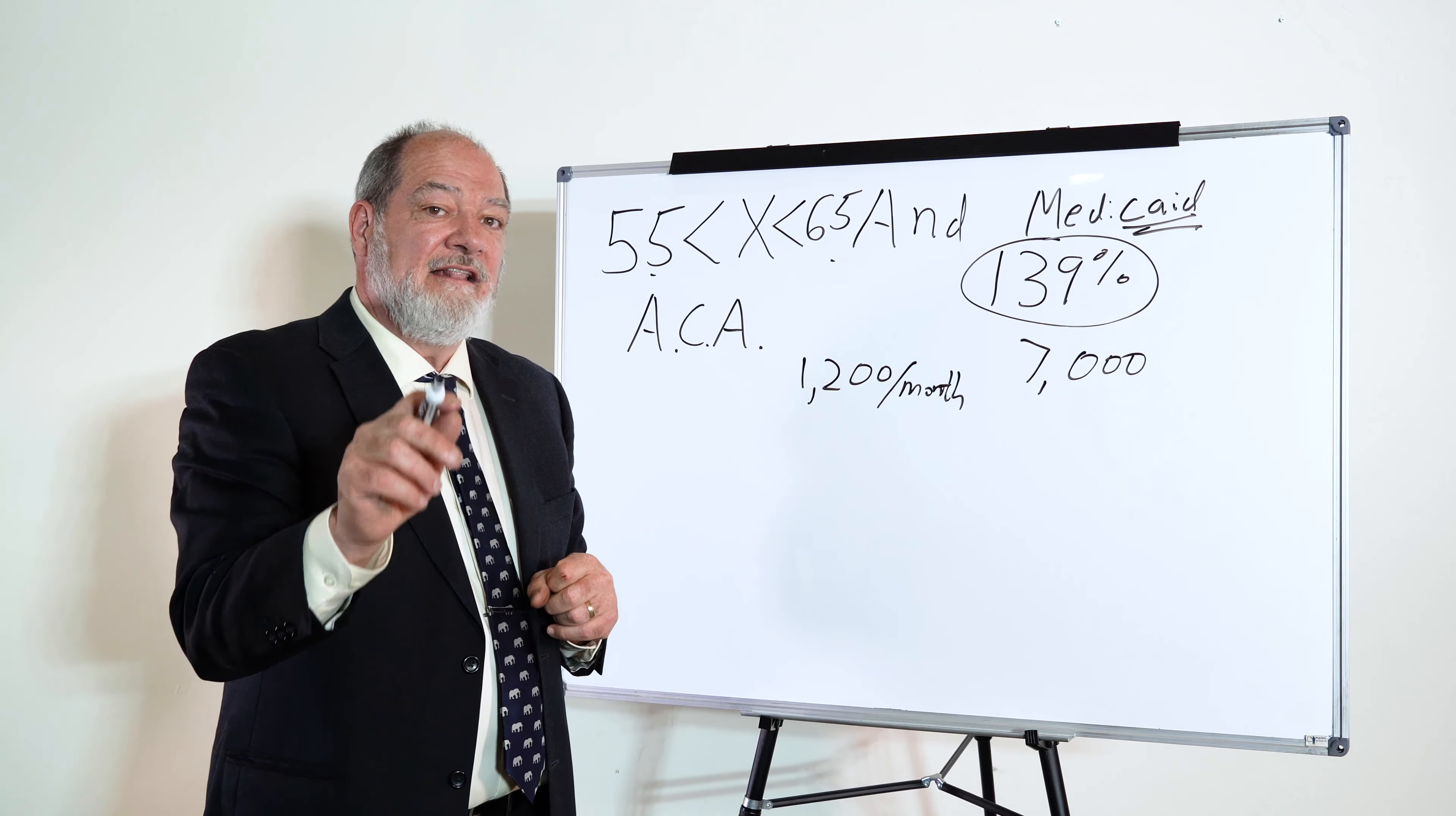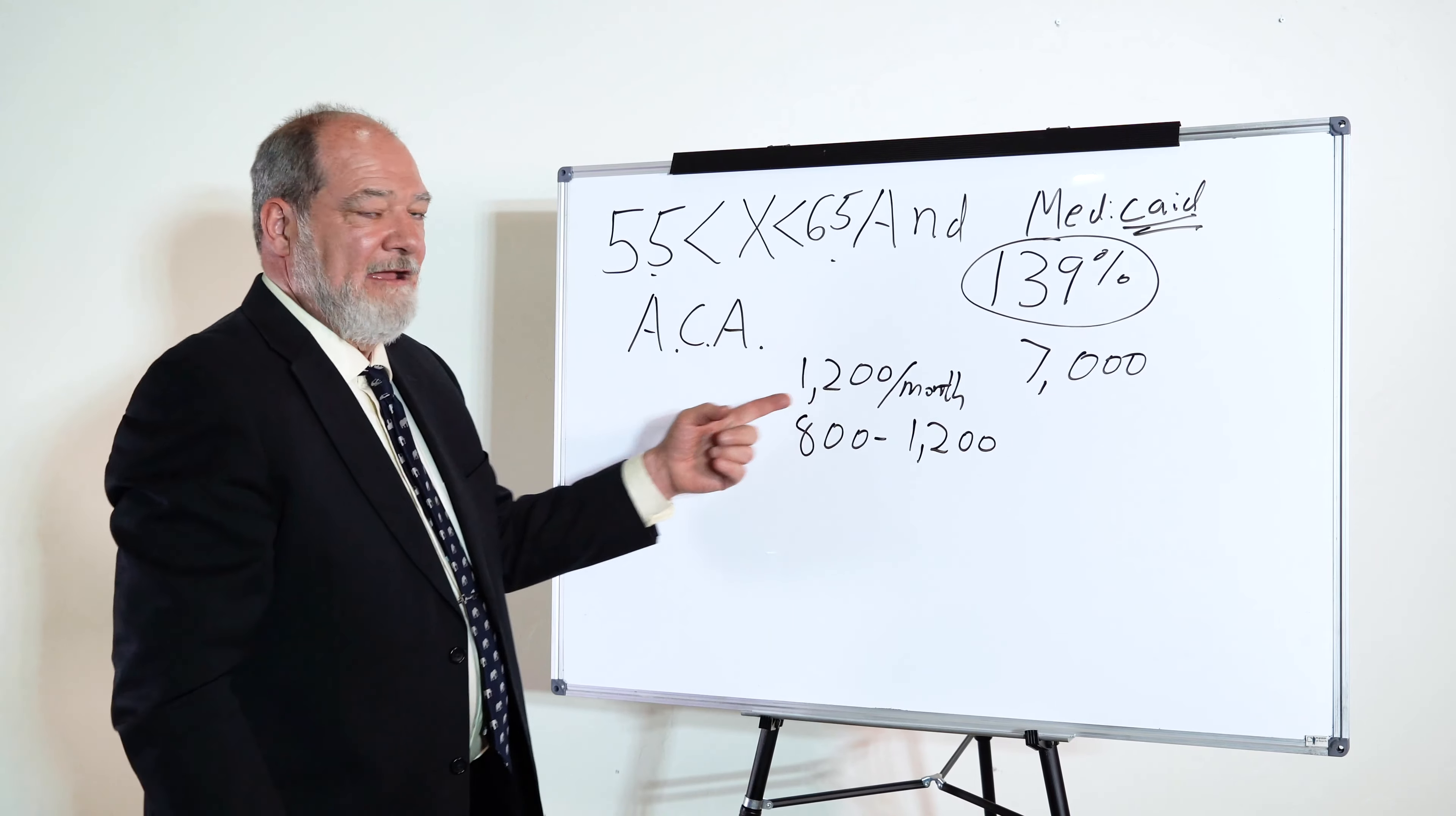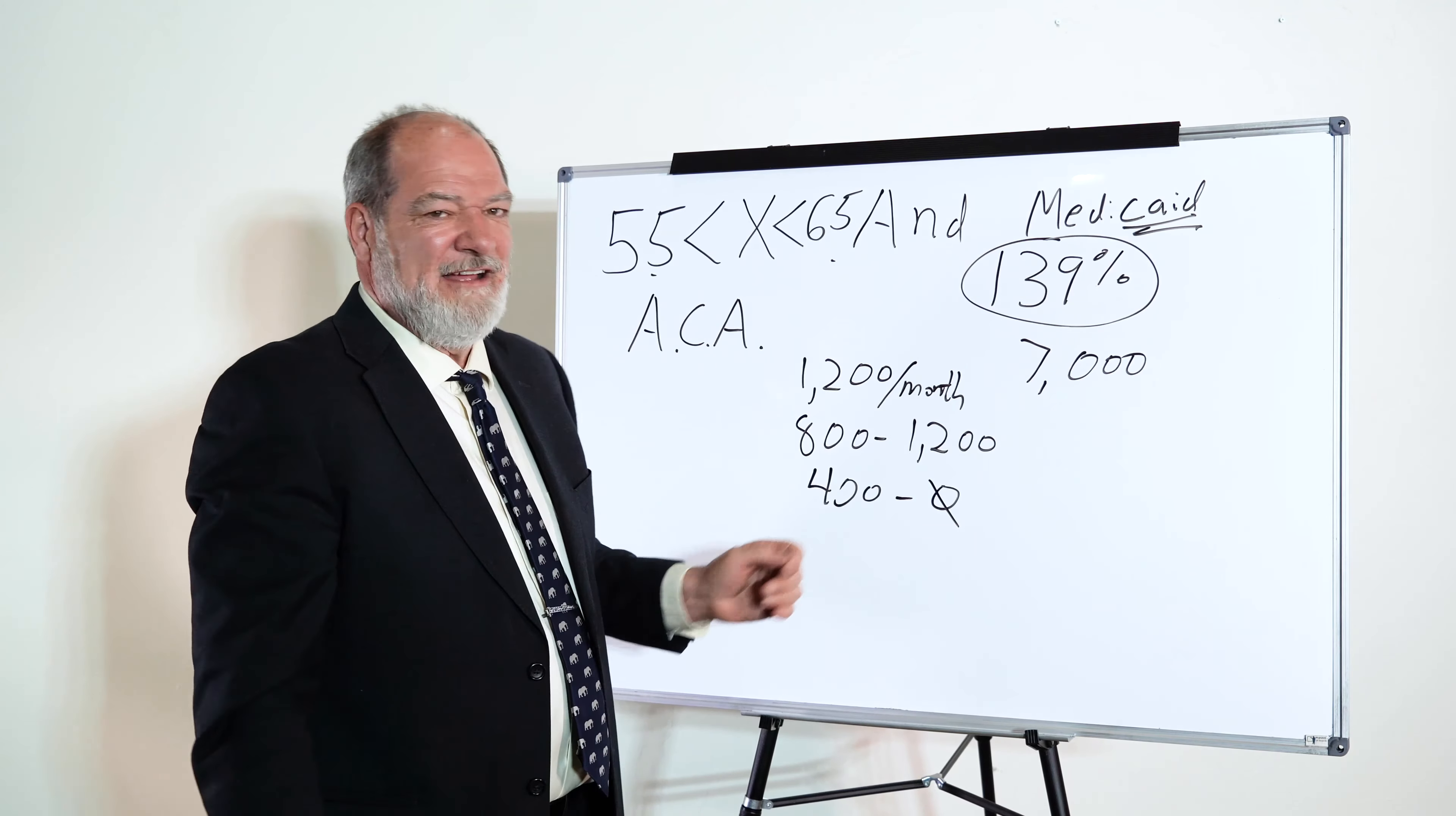But if you make under 139% of the poverty level, lucky you, you can get a subsidy. Now these subsidies range, most of them range between $800 and they can be different to $1,200 a month. So you would be paying anywhere from $400 a month to $0 a month for a plan that's got a $7,000 deductible. Still not that good, especially at $400 a month. But you get the subsidy. Every month they would pay that much of your premium, $800 to $1,200.